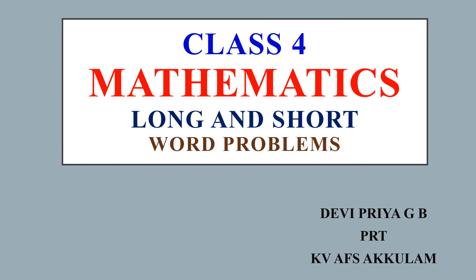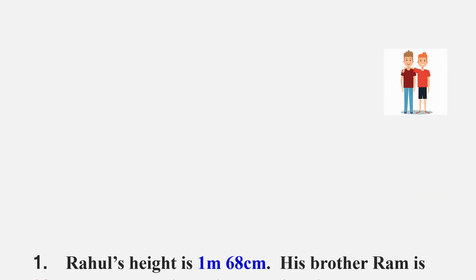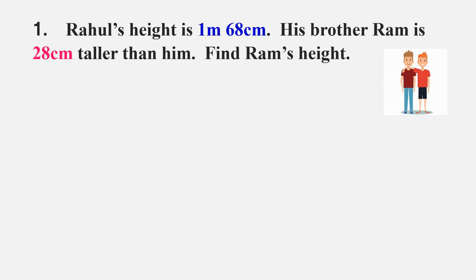Welcome to yet another session of Class 4 Mathematics, Chapter: Long and Short, topic: word problems. Let us start doing the word problems. This is Rahul and his brother Ram. Rahul's height is 1 meter 68 centimeters. His brother Ram is 28 centimeters taller than him. Find Ram's height.